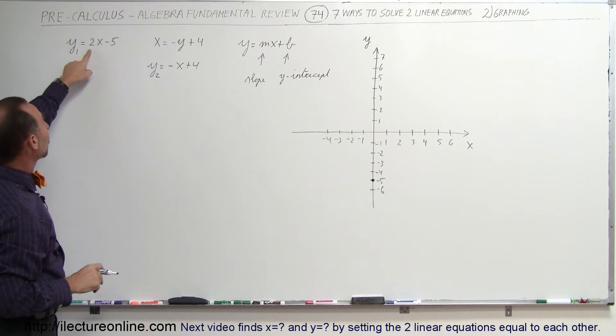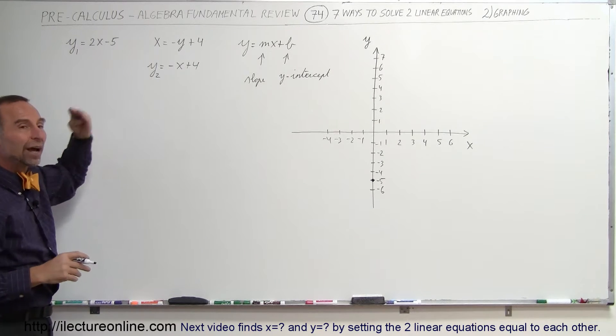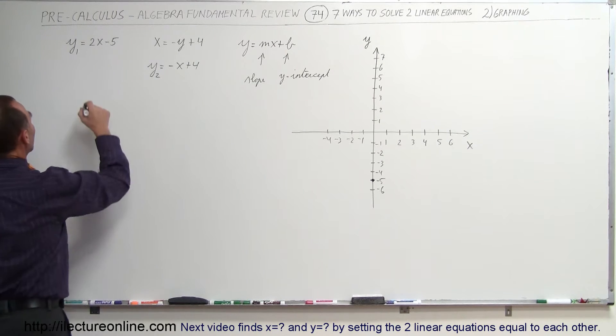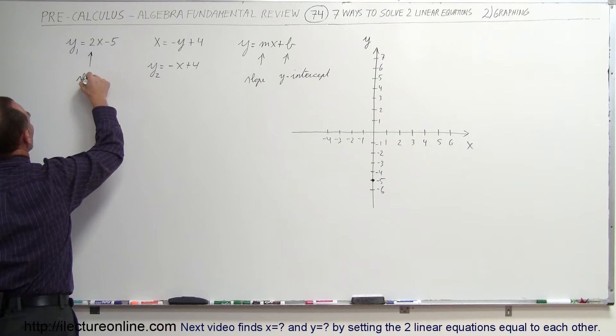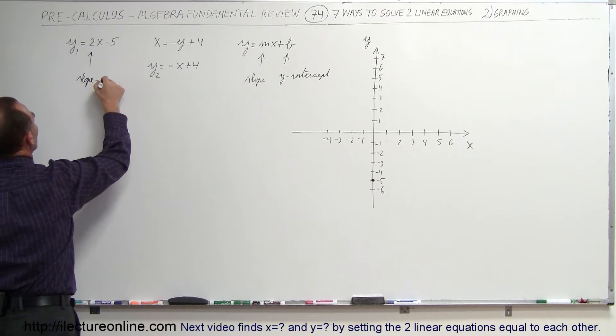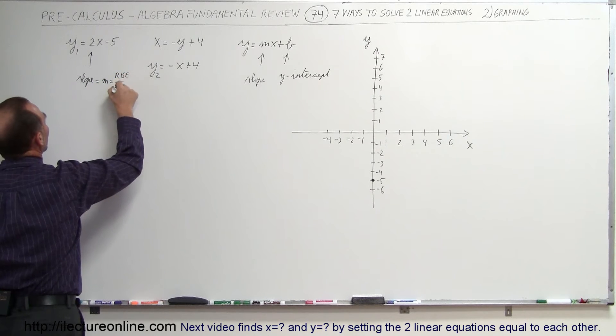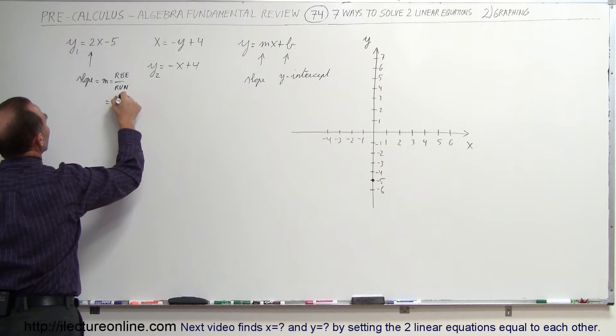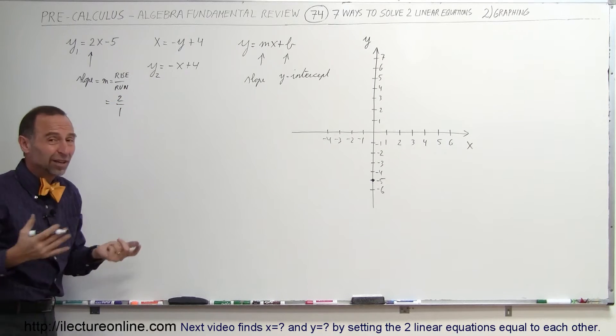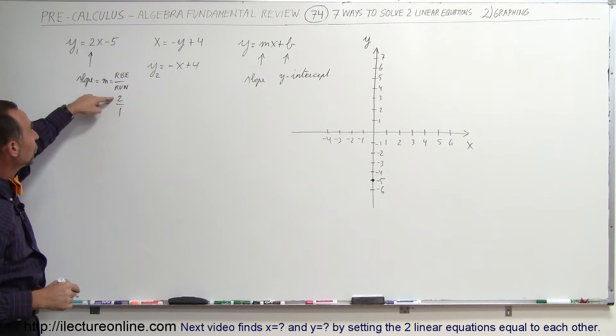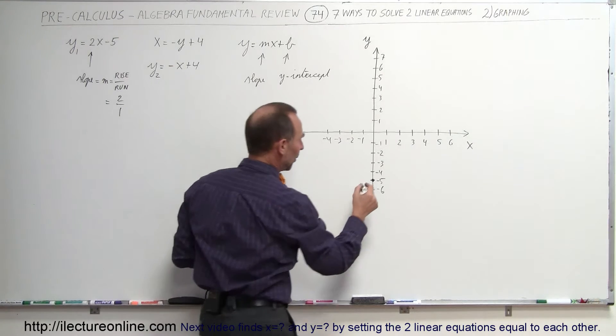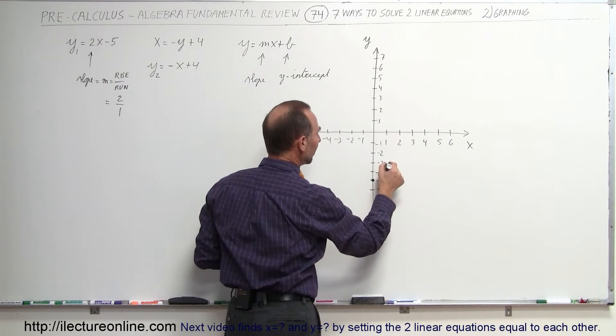Now we realize that the slope is equal to 2. That means it's a rise of 2 and a run of 1. Remember, this is the slope. And the slope, by definition, is equal to m, which is equal to the rise divided by the run. In this case, that's equal to 2 divided by 1. So we have a rise of 2 and a run of 1. So when we go up 2, we go over 1.